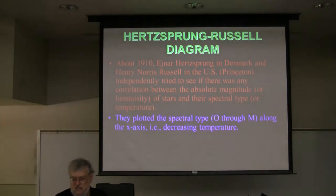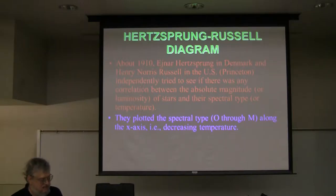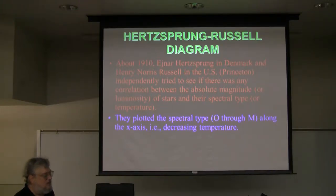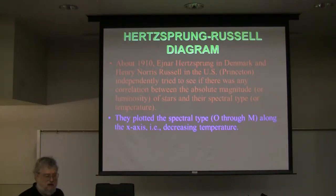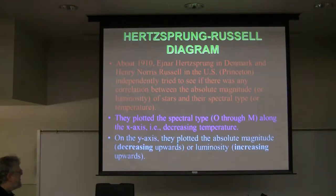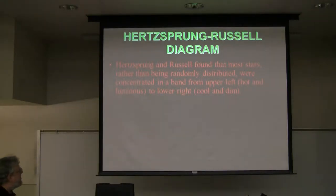Normally when you lay out a graph, you start at the lower left corner — the origin — and both variables increase as you go away from that point. But in this case on the temperature axis, they did it backwards, starting with the hottest ones on the left and the coolest ones on the right. The luminosity is normal — it goes up the vertical axis. The more luminous, the closer it was to the top. Absolute magnitude numbers run backwards anyway, but don't worry about that.